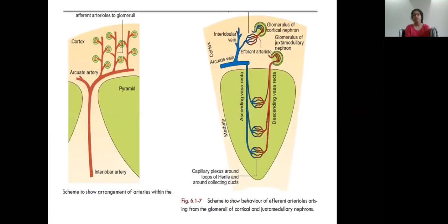This diagram shows the plexus formed between the arterial system and the venous system, with an exactly parallel arrangement of the venous system. On the left side, the diagram shows the interlobar artery running between the two medullary pyramids, dividing at the base of the pyramid into right and left arcuate arteries, which ascend as interlobular arteries and give rise to the afferent arteriole and the formation of the glomerulus.